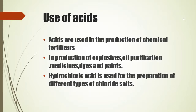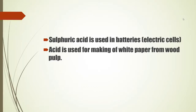Uses of acids: acids are used in the production of chemical fertilizers; in the production of explosives, oil purification, medicines, dyes, and paints; hydrochloric acid is used for preparation of different types of chloride salts; dilute H₂SO₄ is used in batteries (electric cells); dilute HCl is used for sterilization of water; acid is used for making white paper from wood pulp. These six uses of acids have to be learned.